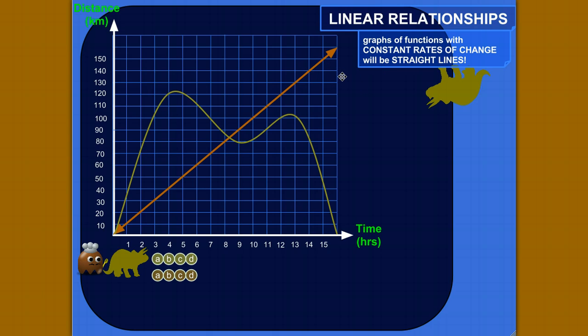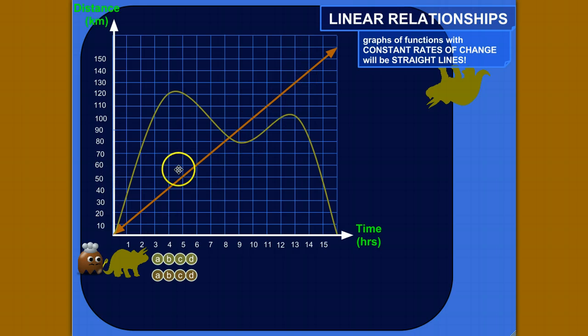Don't try this at home — your home's probably not big enough to run 150 kilometers. So the question is: how do you tell, from the graph of a function, if that function has a constant rate of change? Well, the simple answer is the graph will be a straight line. If there's a constant rate of change, it'll be a straight line. If it's not a straight line, there isn't a constant rate of change.